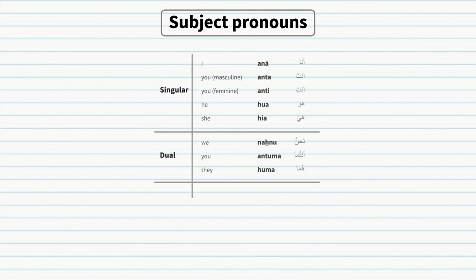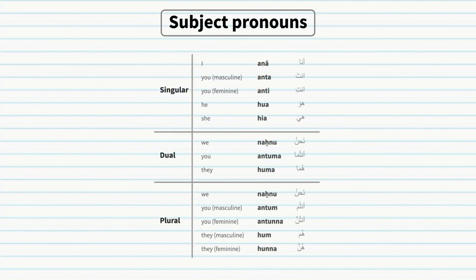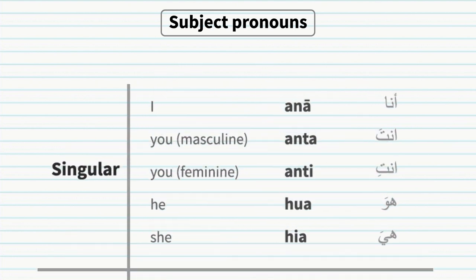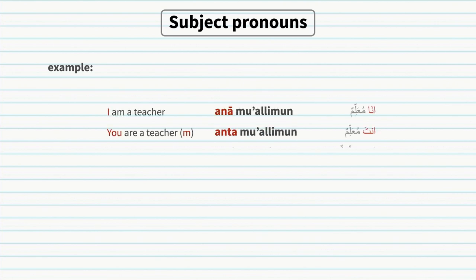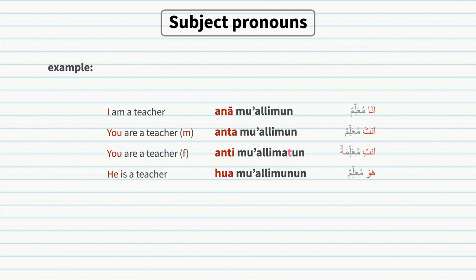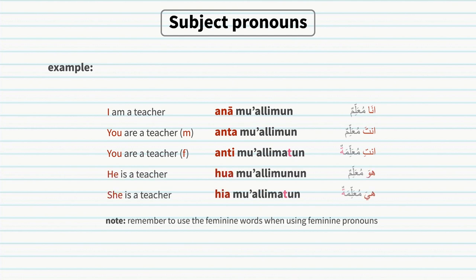Pronouns — subject pronouns in Arabic. Because the full list is too large, we will focus on singular subject pronouns: ana (I), anta (you, masculine), anti (you, feminine), huwa (he), hiya (she). Examples: ana mu'allim (I am a teacher), anta mu'allim (you are a teacher, masculine), anti mu'allima (you are a teacher, feminine), huwa mu'allim (he is a teacher), hiya mu'allima (she is a teacher).